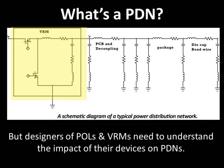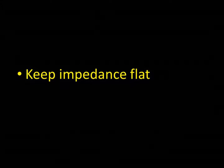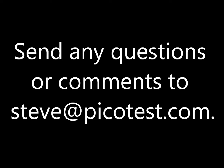The main aspect of POL or VRM design that will affect PDN performance is the power converter's output impedance. This leads to our discussion of the two other PDN concepts that power designers must be aware of. We'll discuss the PDN concepts — keep impedance flat and impedance matching is critical — in parts 2 and 3 of this video series. If you have any questions about the information presented in this video, please email me at steve@picotest.com. Thank you.